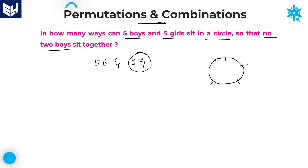These are the five girls. Five girls can be arranged in a circle in 4 factorial ways. When arranging n persons in a circle, they can be arranged in (n minus one) factorial ways. Here the condition is no two boys sit together.